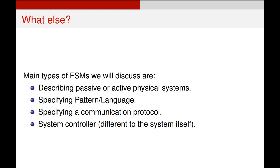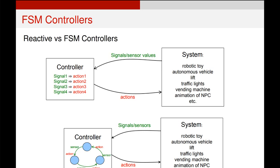The types of finite state machines we will primarily discuss are system controllers and descriptors of active or physical systems, though you will find finite state machines used in a variety of other ways. The real strength of finite state machines comes when you compare them to reactive controllers. A reactive controller responds when some sensor triggers — for example, if I see a bright light, I close my eyes. Each signal maps to one and only one action, and every signal will always elicit that action. A finite state machine controller means the same signal can cause different actions based on the current state the system is in, and this is the key to what allows them to create such complex, interesting behaviors.